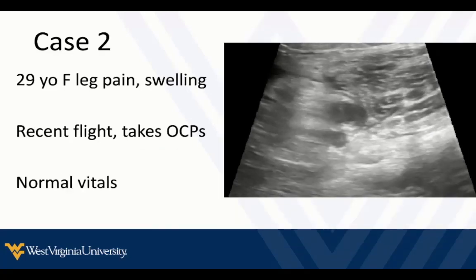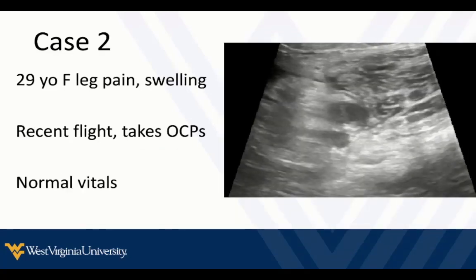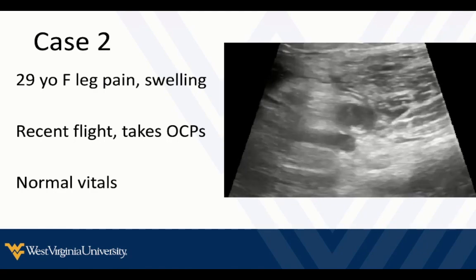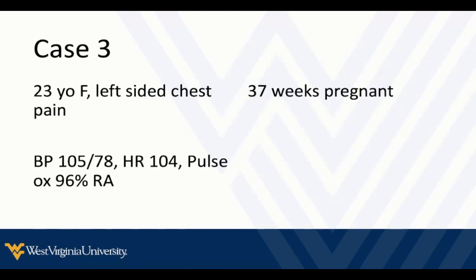Here's a 29-year-old female with leg pain and swelling, a recent flight, and on oral contraceptive pills — normal vital signs, otherwise looks pretty stable. Another case: a 23-year-old female presenting with left-sided chest pain; blood pressure and heart rate don't look too terrible, pulse ox is okay, but the patient is 37 weeks pregnant. Think about how DVT ultrasound might help us in cases like this.